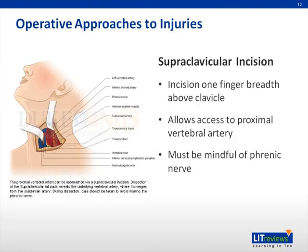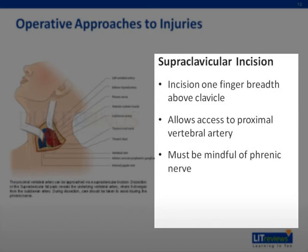However, in certain cases, a sternocleidomastoid incision may not be the most appropriate choice. Another incision used less commonly is a supraclavicular incision, made approximately one finger breadth above the clavicle. This allows access to the proximal vertebral artery or other proximal vascular structures. However, when going through a supraclavicular incision, one must be mindful of the phrenic nerve, which provides innervation to the diaphragm.